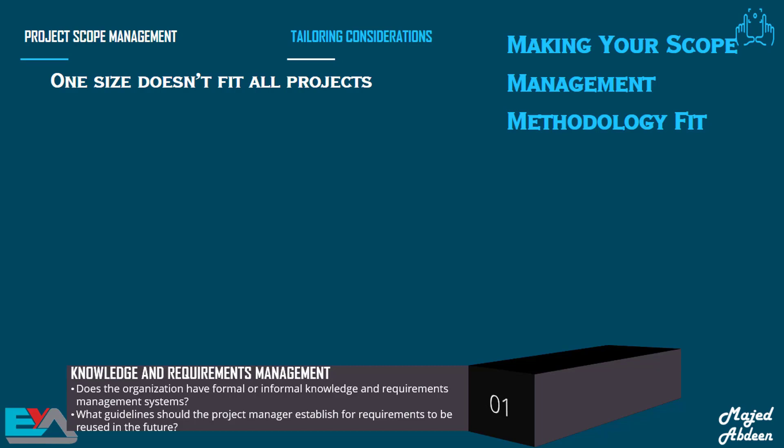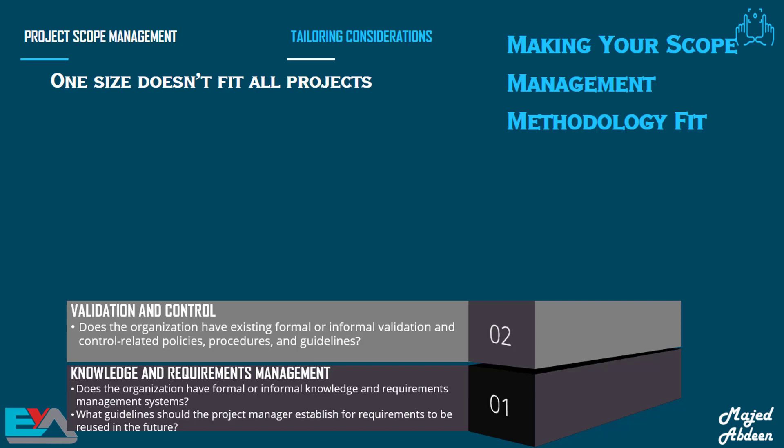It's the same with requirements management. For instance, maybe the company has its own methodology for collecting requirements, and maybe they have an effective way to do so. In which case, there is no need to set up a new system, or you can tailor their method to suit your project. By the way, this is one of the processes we will talk about in this chapter. The next tailoring considerations are validation and control of the scope. We should ask: does the organization have existing formal or informal validation and control-related policies, procedures, and guidelines? There are two processes in scope management related to validating and controlling the scope.